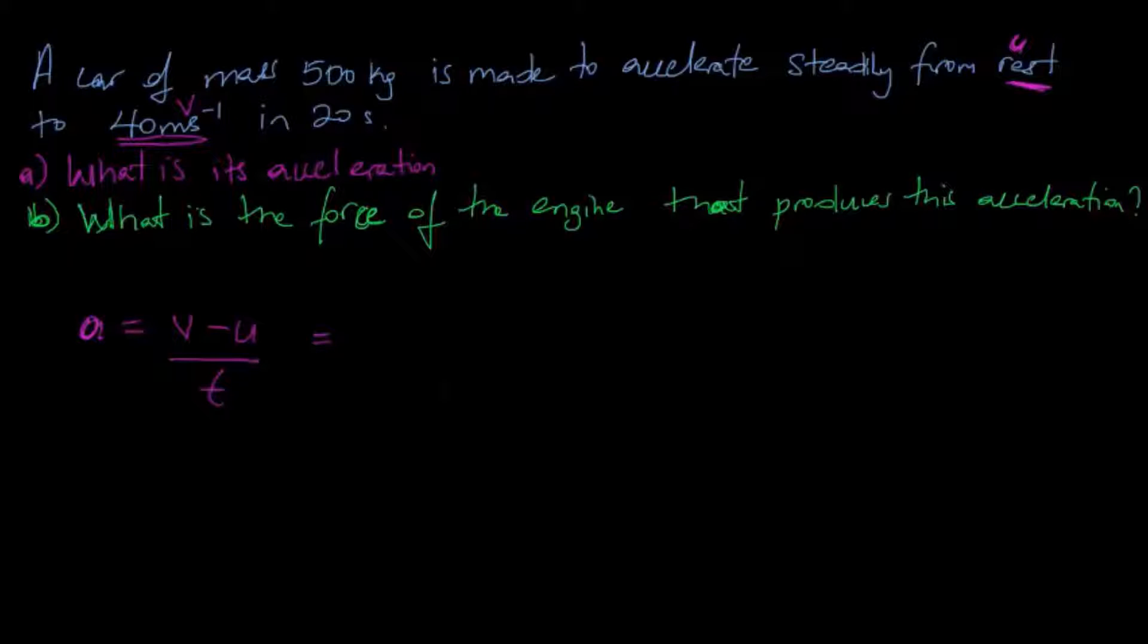We can fill out our formula then. We have our final velocity being 40 meters per second and our initial velocity being zero. The time the car took to move from zero meters per second, which was rest, to 40 meters per second is 20 seconds.